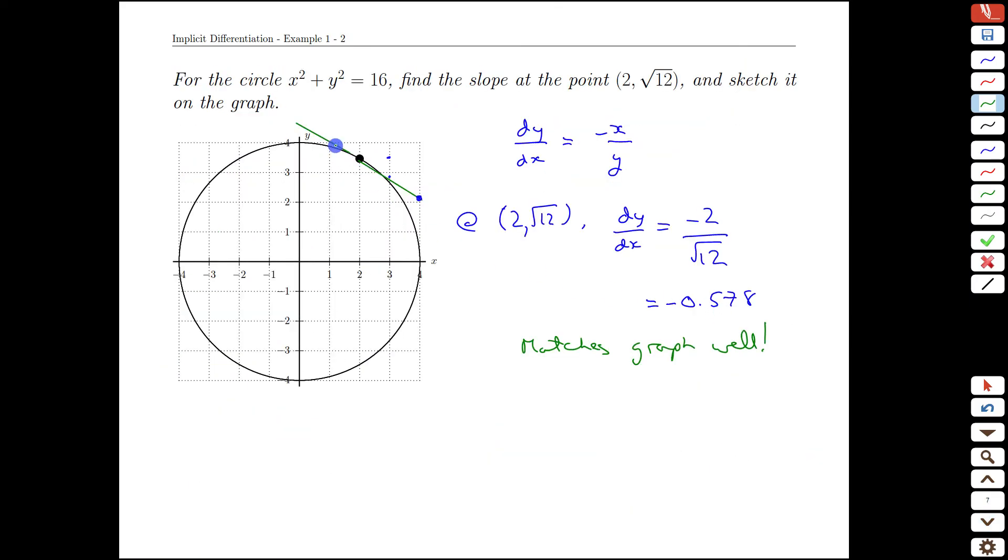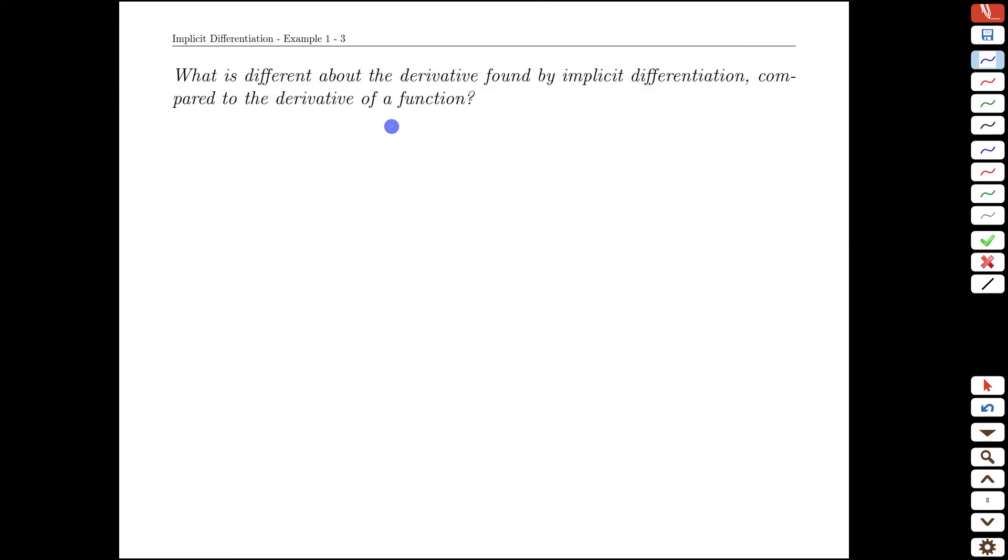Once we compute those values at a point we get slopes that make sense with the sketch that we're looking at. So this is fantastic. Now is there something different about what we just found?